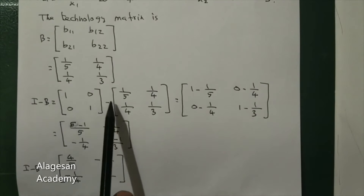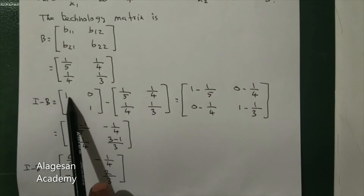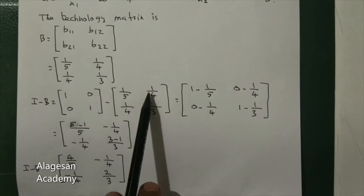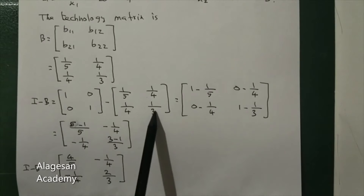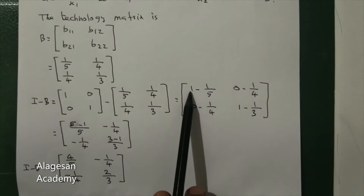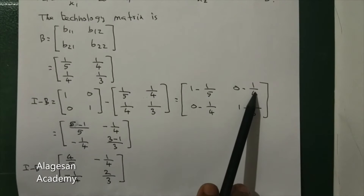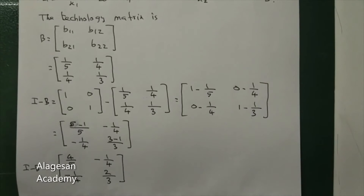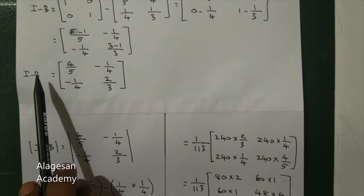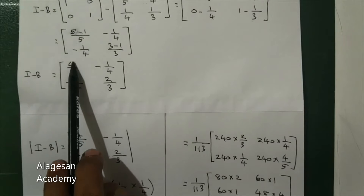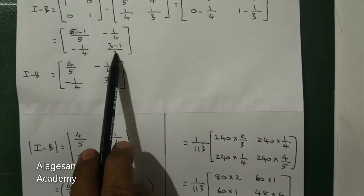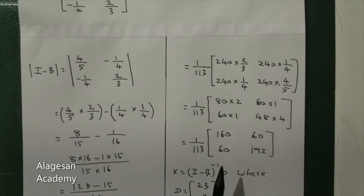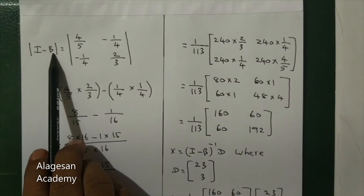Next, compute (I - B). We get: 1 - 1/5 = 4/5 in position (1,1); 0 - 1/4 = -1/4 in position (1,2); 0 - 1/4 = -1/4 in position (2,1); and 1 - 1/3 = 2/3 in position (2,2). So (I - B) = [[4/5, -1/4], [-1/4, 2/3]].